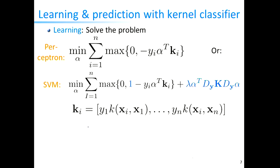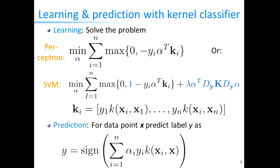Last lecture, we showed how to apply the kernel trick to the support vector machine. Since the SVM is very similar to the perceptron, it's no surprise it can be kernelized. The difference is there's also a regularization term, which is easy to kernelize. The loss function is the hinge loss, but it looks very similar to the perceptron.